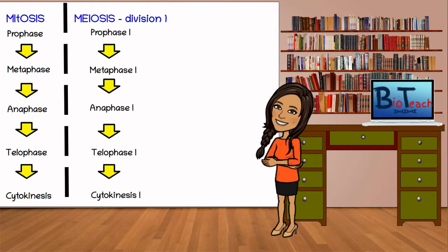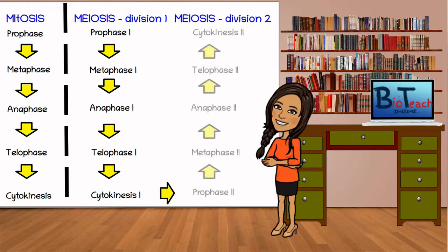In meiosis, we have all of those phases, but twice. So effectively ends up being first division of prophase 1, metaphase 1, anaphase 1, telophase 1, and cytokinesis 1. And then we end up with the division 2, or the second division of meiosis, which ends up being prophase 2, metaphase 2, anaphase 2, telophase 2, and cytokinesis as the last part.